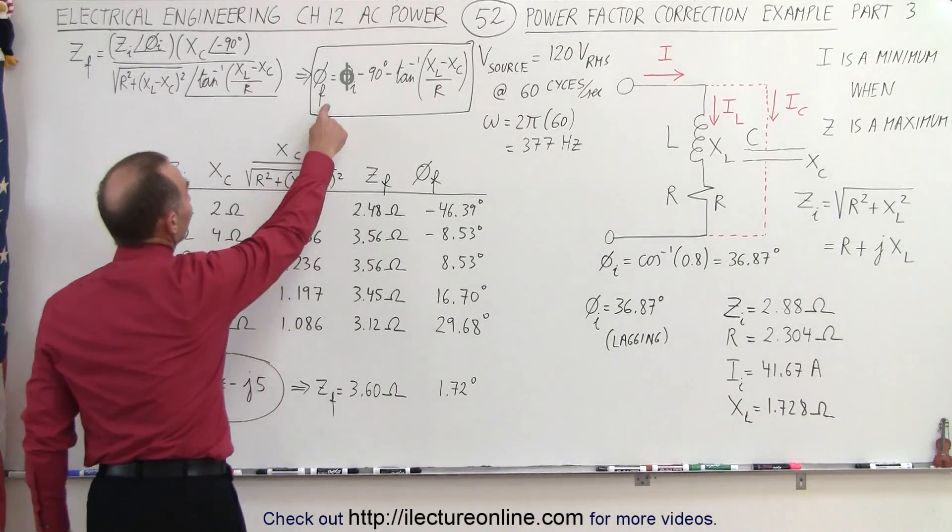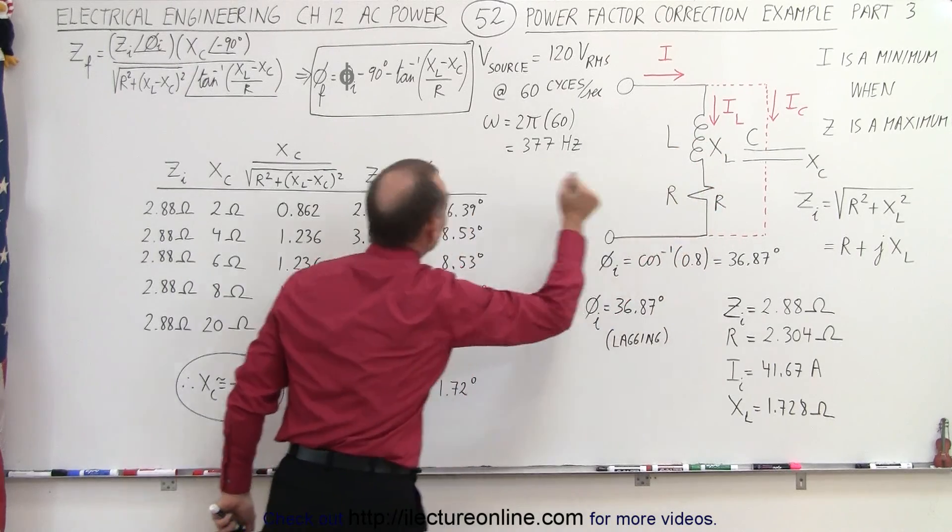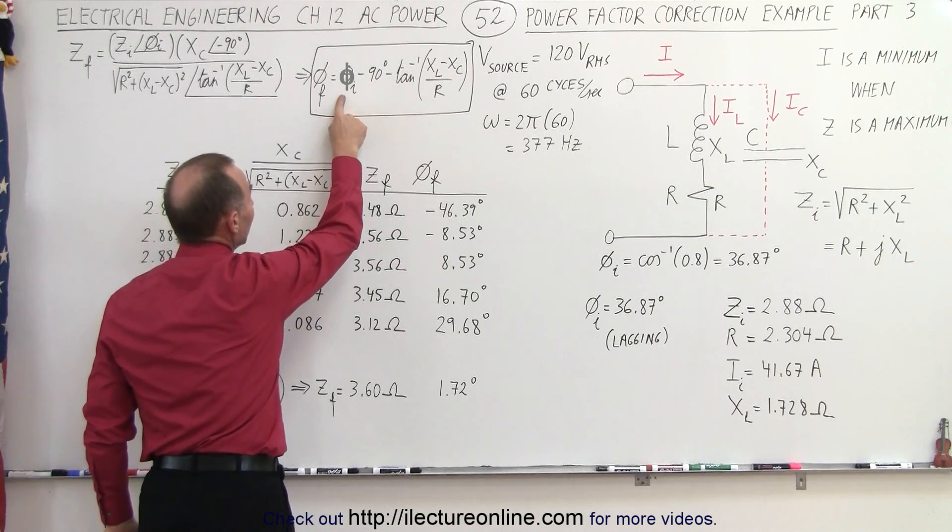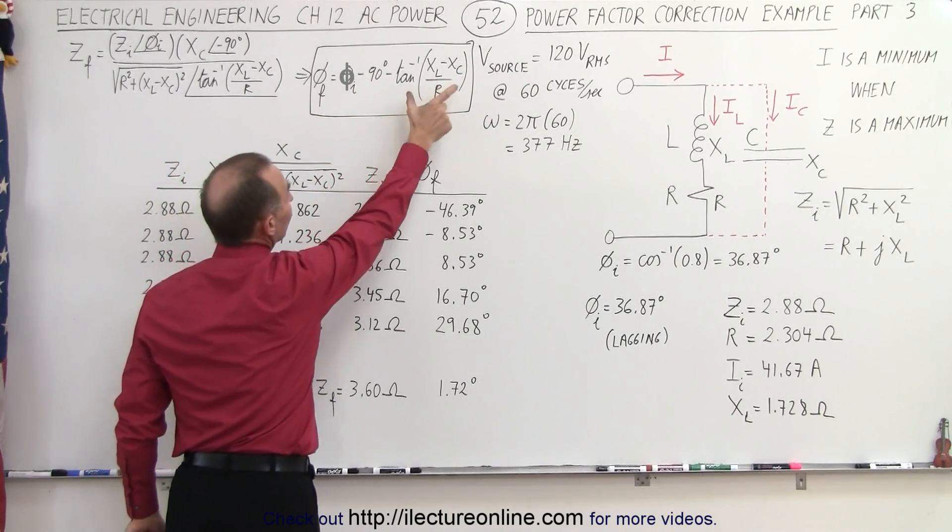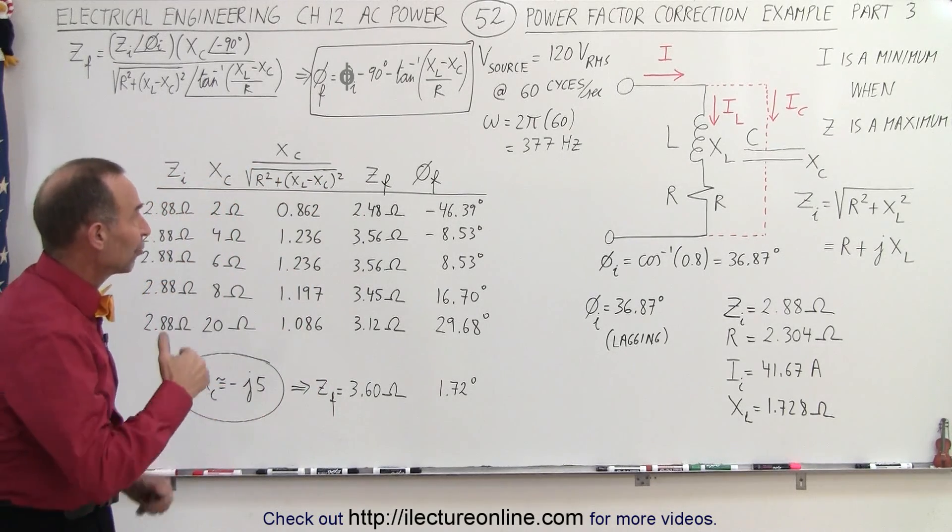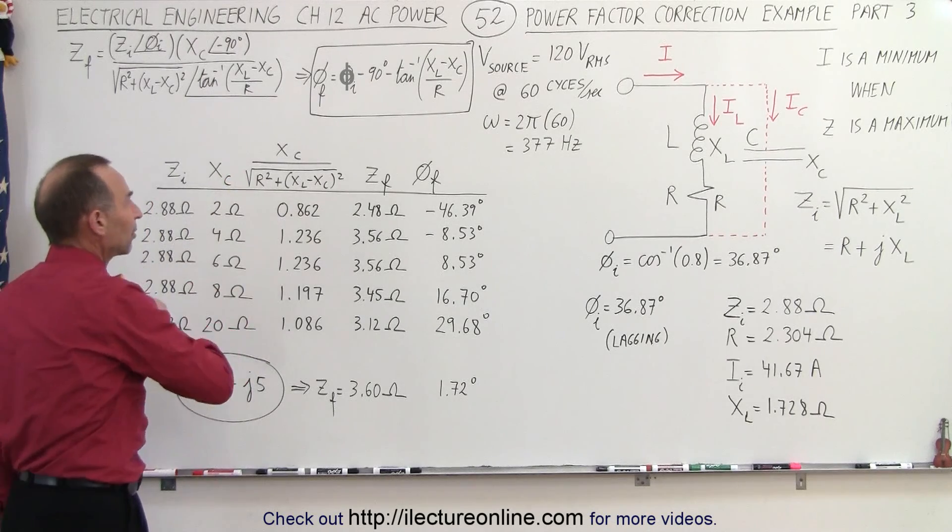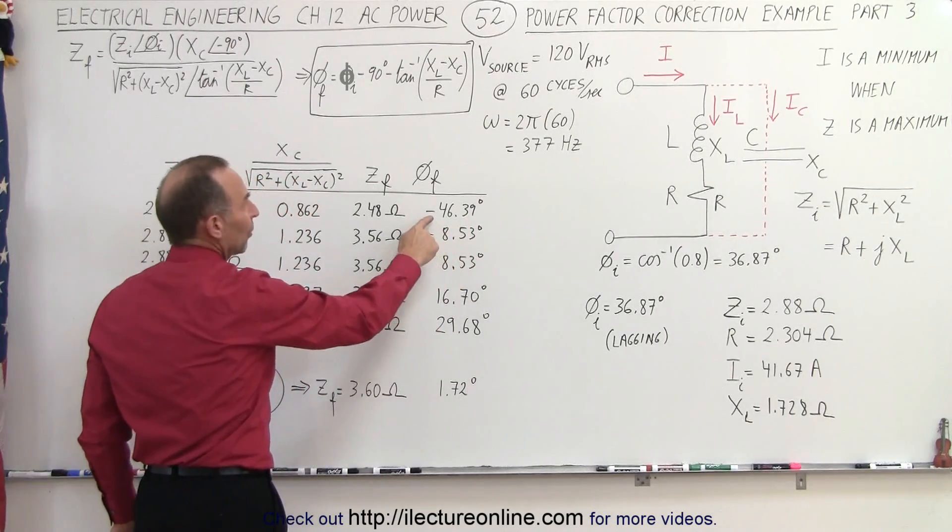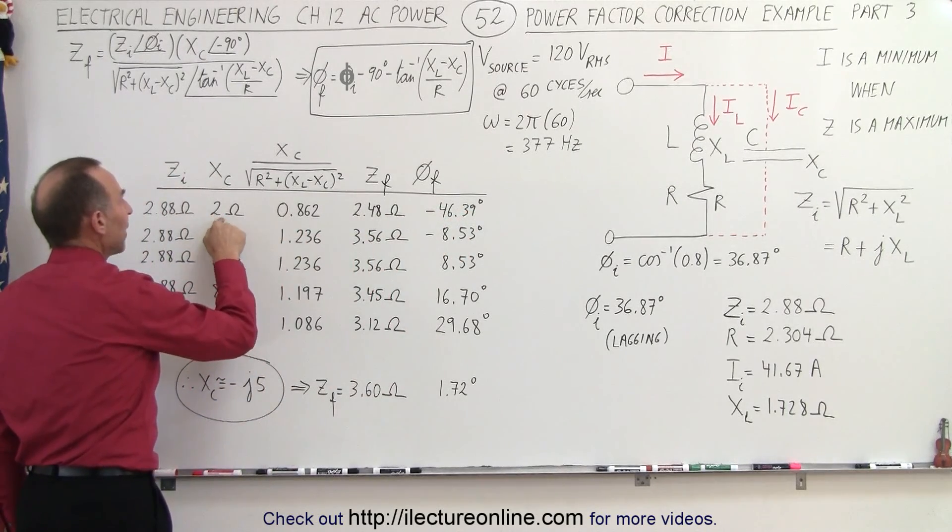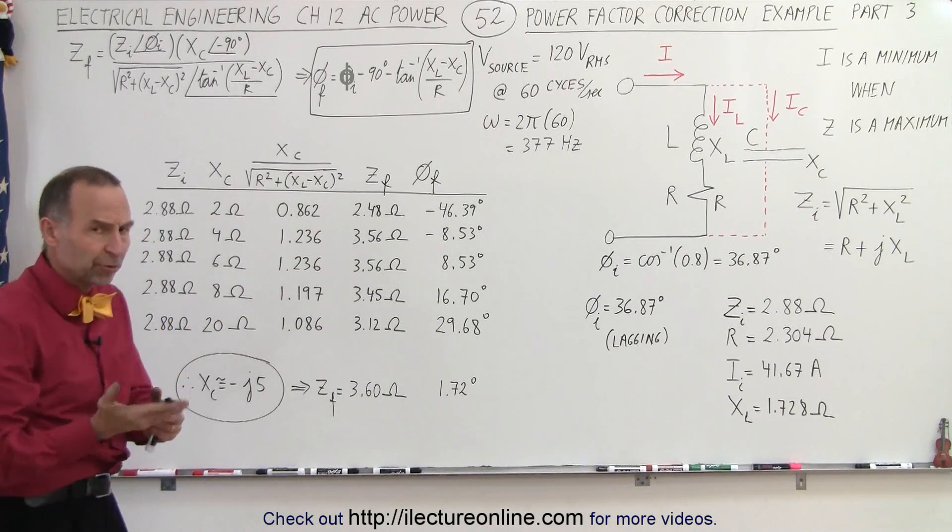We can then see that the phase angle for the final impedance, when we add the capacitor in parallel to the initial inductive circuit, we then get the initial phase angle minus 90 minus the tangent of the difference in the reactants divided by the resistance. If we then plug in the various values for the capacitor reactants, we get new phase angles. Notice we get a minus 46.39 degree phase angle here when we put in a capacitor that gives us two ohms of capacitor reactants.